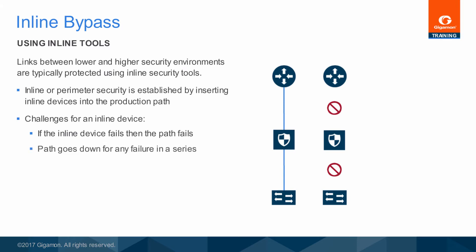It is not unusual to have more than one inline device in series, where traffic approved by one is passed to a second for additional inspections. When a series of tools is present, then any single failure in this series will take down the production link. You have introduced multiple points of failure, and all traffic is required to pass through each inline device, whether or not it needs to.